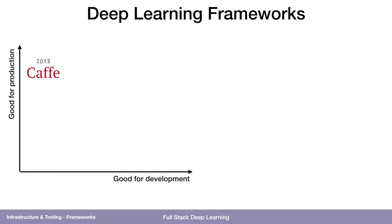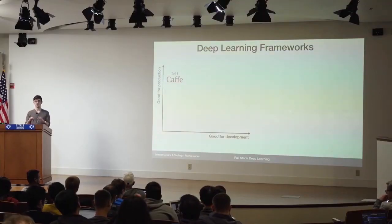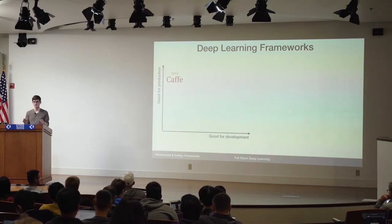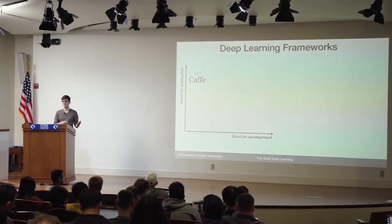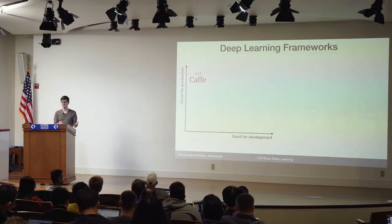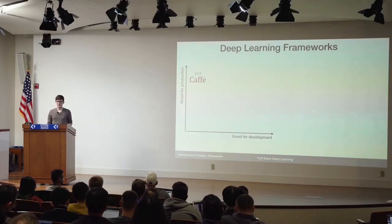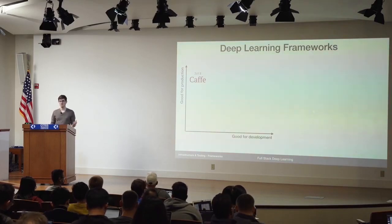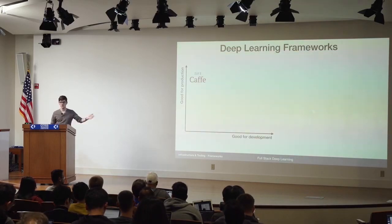In 2013, Caffe was written here at Berkeley, actually on the seventh floor of this building, by my lab mates. It was based in C++. If you wanted to contribute a new layer type to Caffe, you had to write it in C++. You had to write the backward step yourself — differentiate your forward pass and then write it in C++. So it was not good for development; you couldn't easily contribute a new layer type or connect different weird graphs. But it was very good for production because it's in C++ and it just runs as fast as possible, calling out to CUDA.